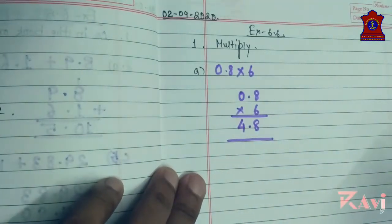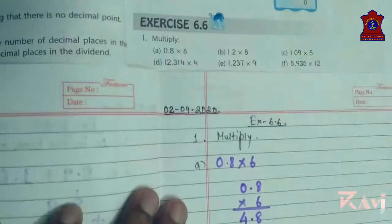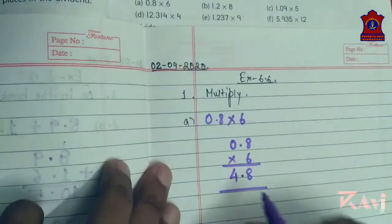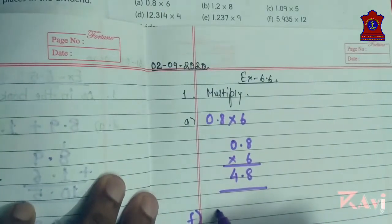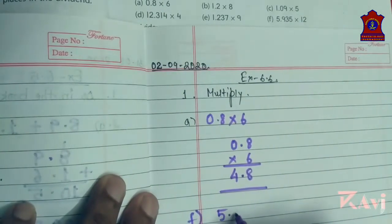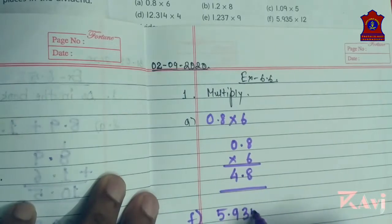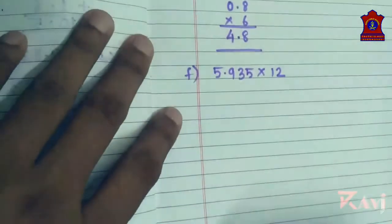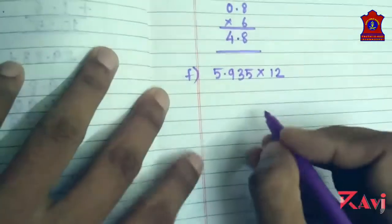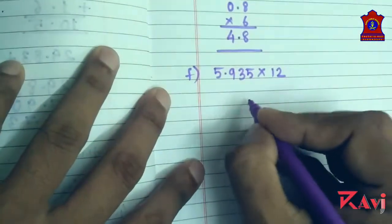Let me do one more question, question number f. I'm doing question number f: five point nine three five into twelve. See here again, arrange it in column, five point nine three five into twelve.